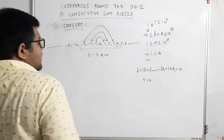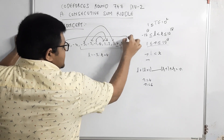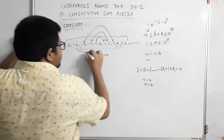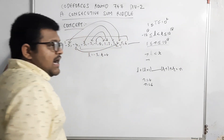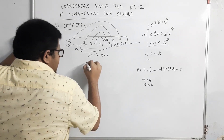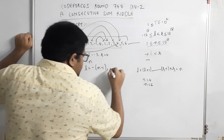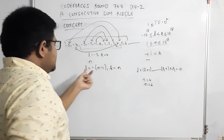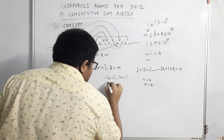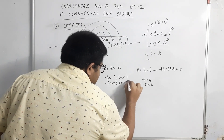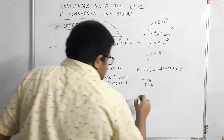Similarly, agar n = 6 hai toh hum l = -5 se lekar r = 6 tak jaayenge. -5 aur +5 cancel, -4 aur +4 cancel, aur baaki sab cancel ho jaayenge, toh answer 6 aa jaayega. In general, agar input n hai toh l hona chahiye -(n-1) aur r hona chahiye n. Isse -(n-1) aur +(n-1) cancel ho jaayenge, -(n-2) aur +(n-2) cancel, up to -1 aur +1 cancel, aur answer n bacha rahega.